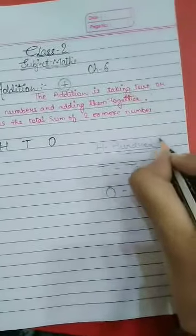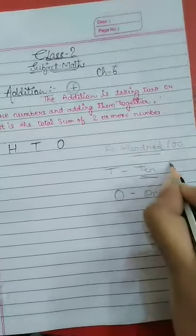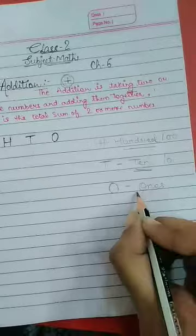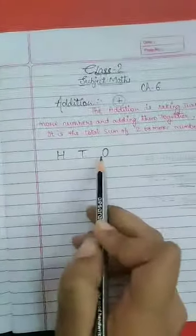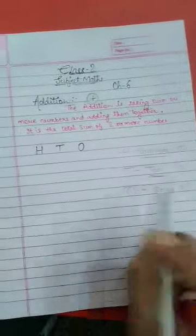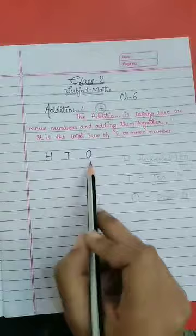As you all know, hundred is having two zeros, ten is having one zero, and one is having obviously no zero. That's why we put O here for ones. Ten is having one zero, we put it after this, and hundred is having two zeros, that's why we put it here. Hundred, ten, ones.